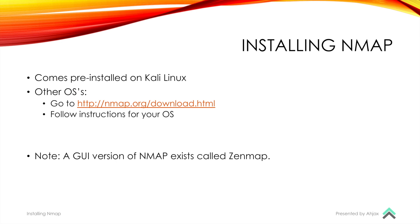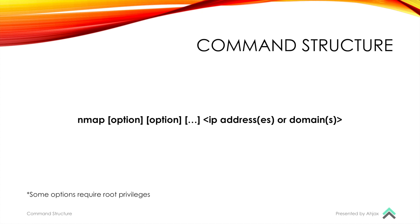At this point you should have NMAP installed, so let's move on to the next part. Go ahead and pull up a terminal and we'll talk about some of these things. NMAP mimics the command structure of most command line tools: you have NMAP followed by your options, which are also called flags, and then your IP addresses or your domains. With NMAP you can scan multiple addresses or domains at the same time, or you can do just one. There are also some commands that require you to have root privileges, but NMAP will let you know what those are.